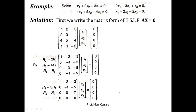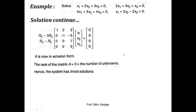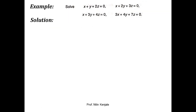We find that further reduction is not possible, so we stop. This matrix is now in row echelon form. Counting the non-zero rows, we get three, so rank of A is three. Since the number of unknowns is also three, rank of A equals the number of unknowns. Therefore, this system has a unique trivial solution: x1=0, x2=0, and x3=0.